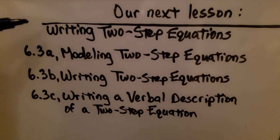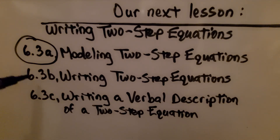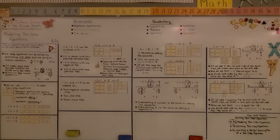We're going to continue learning about two-step equations. We've finished 6.3a for modeling them. Now we're going to be actually writing two-step equations in 6.3b. Remember: when a number is directly next to the variable on its left, that's the coefficient, and it means you're multiplying that coefficient by some unknown number x, or whatever the variable is. The whole concept we're trying to learn is how to use inverse operations to isolate x to one side of the equation — whether the variable is on the left side or the right side. Have a wonderful day, I hope you're doing well, and I hope you join me for the next lesson. Bye!